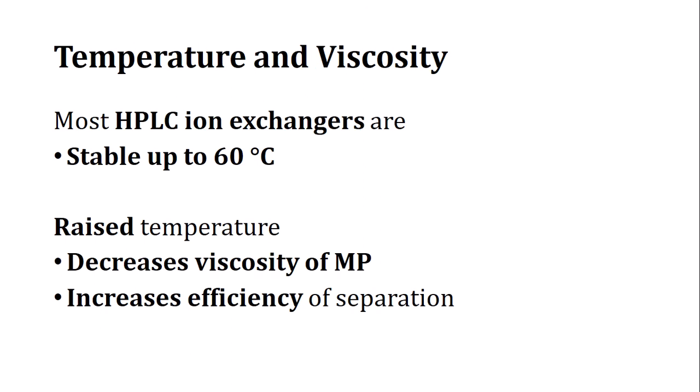Temperature and viscosity are important factors. In HPLC ion exchange, the exchanger may be stable up to 60°C. Raising the temperature decreases the viscosity of the mobile phase, which increases efficiency because at lower viscosity more ions can bind to the stationary phase matrix.